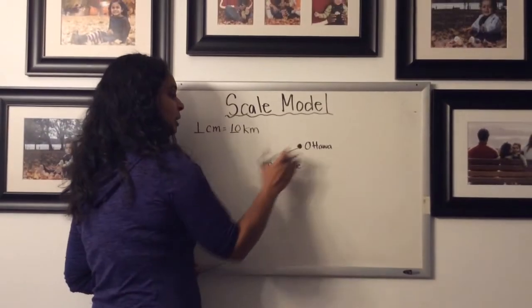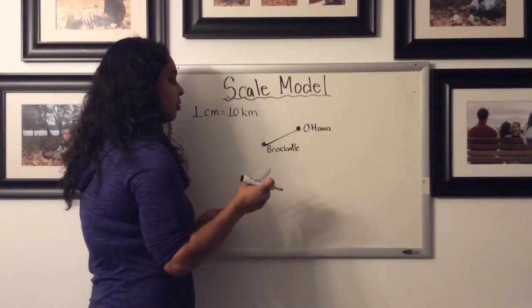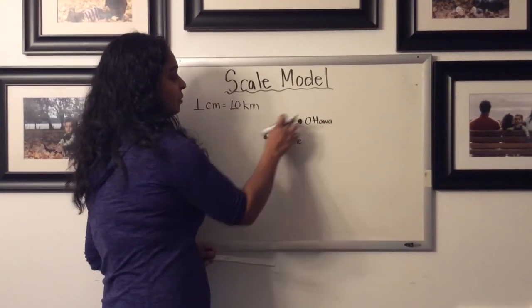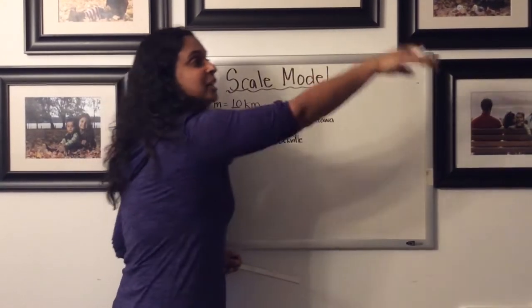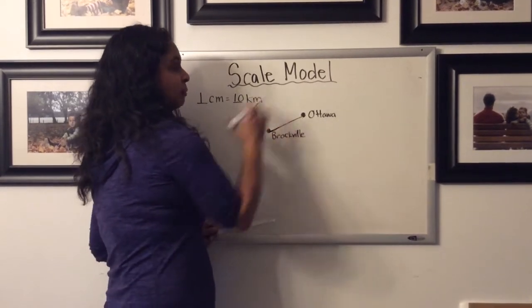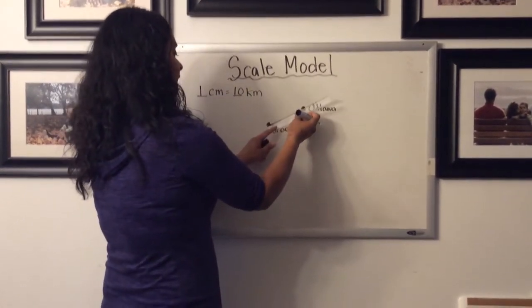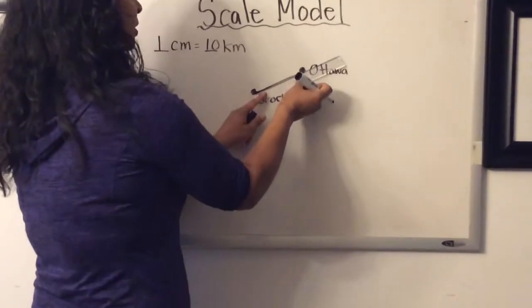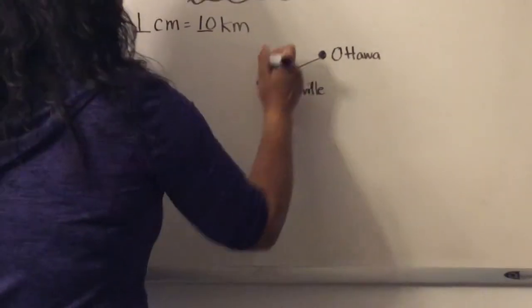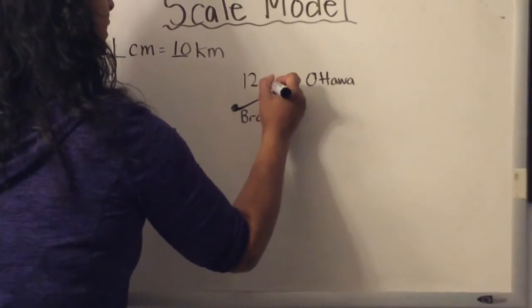Here I have the distance between Brockville and Ottawa. I know that in real life it's not this close—I can't reach out and touch Ottawa. That's where the scale model comes in. Using my ruler to measure, Brockville to Ottawa is 12 centimeters apart.